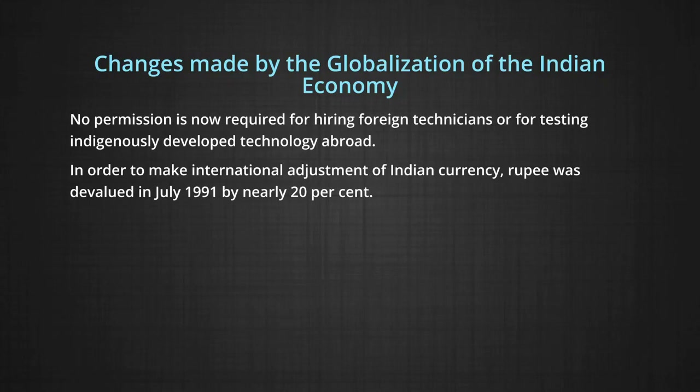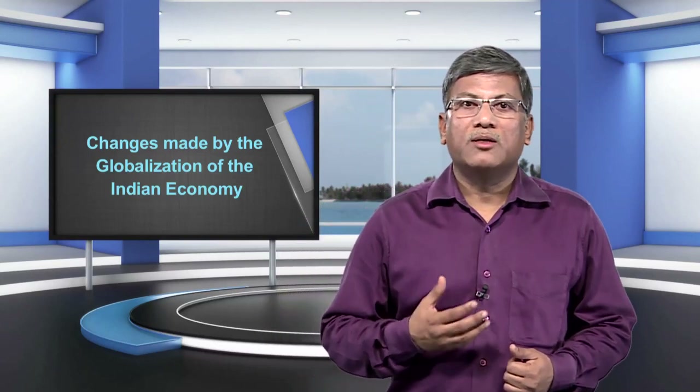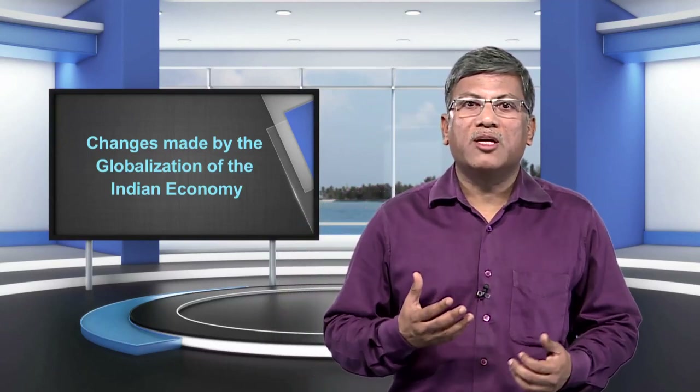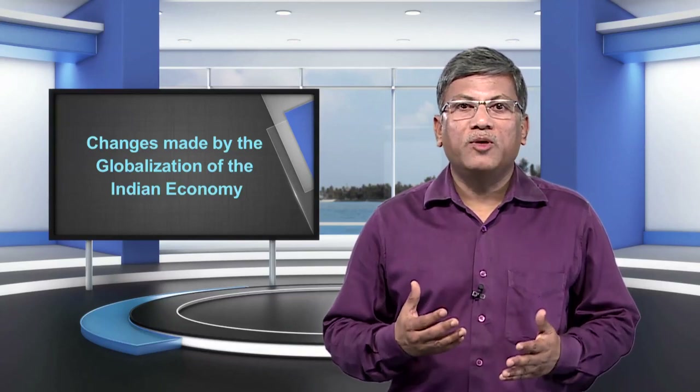In order to make international adjustment, the Indian currency rupee was devalued in July 1991 by nearly 20 percent. It stimulated exports, discouraged imports, and raised the influx of foreign capital. To integrate the economy with the world, the Union Budget 1992-93 made the Indian rupee partially convertible, and then the rupee was made fully convertible in the current account in the 1993-94 budget.